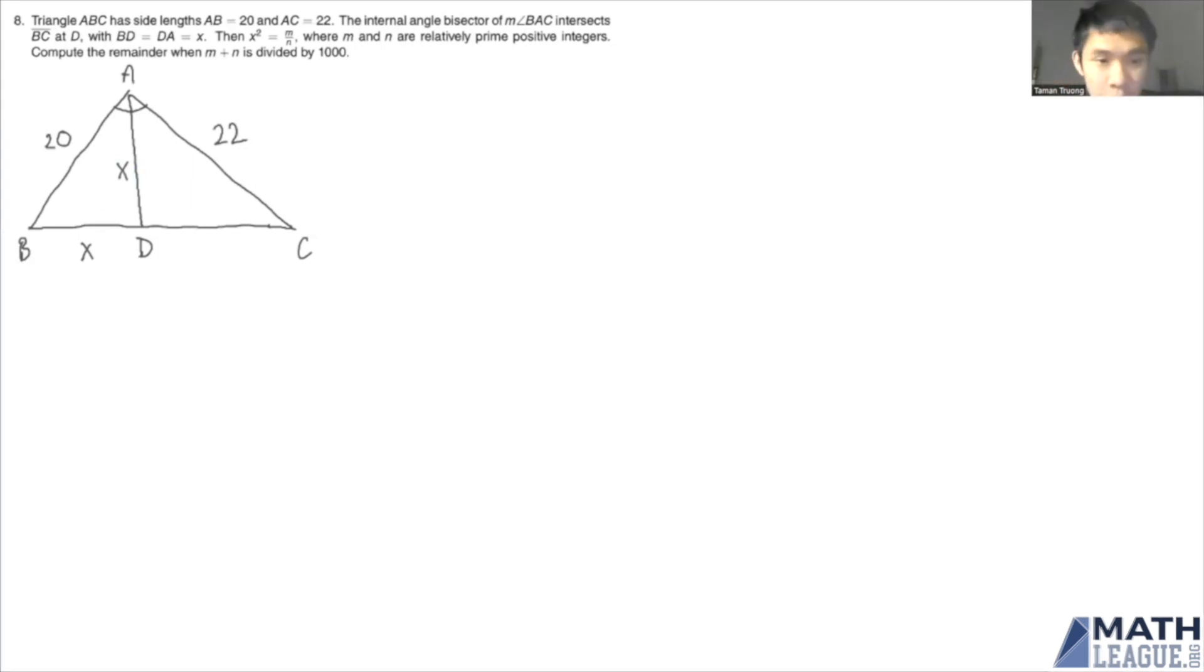All right, so we have our diagram here. We have triangle ABC. AB is 20, AC is 22, with a cevian, namely the angle bisector AD drawn from point A to D on segment BC, with BD equals X and AD also being X as well.